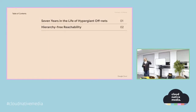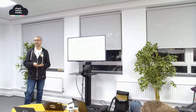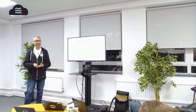Off-net is when an operator like Google or Akamai has their own network, and then they have caches which are not on their own network — they're off-net, deep inside ISP networks. The study looked at how they've grown over the years. The second paper is 'Hierarchy Free Reachability,' which examines how the reach of the big delivery networks has changed over the years.